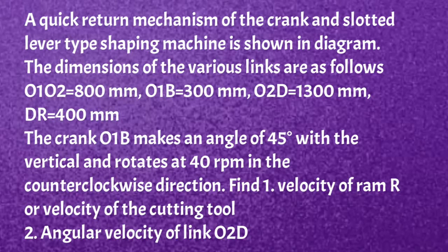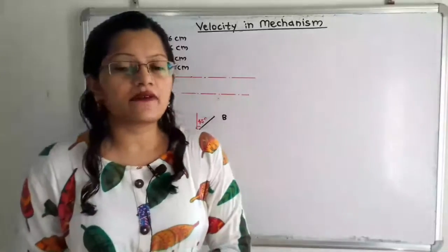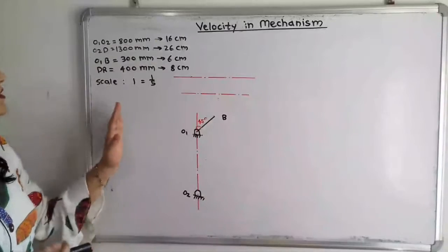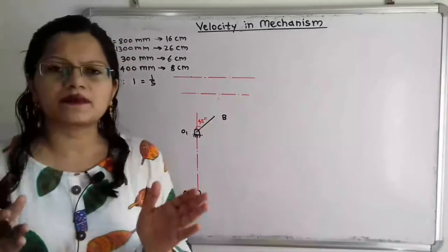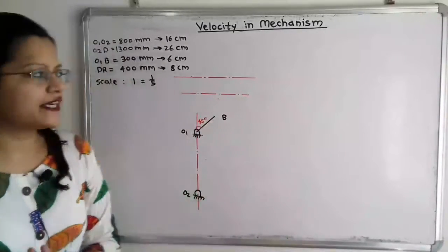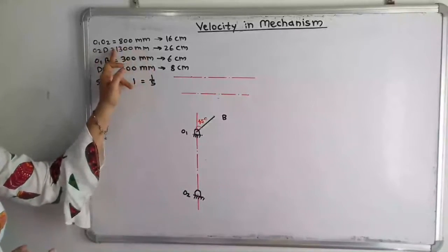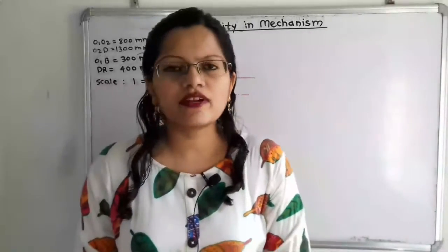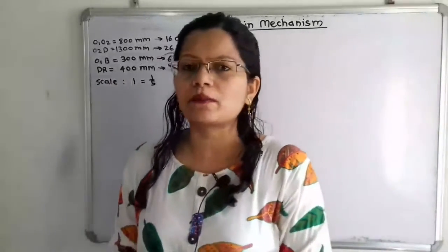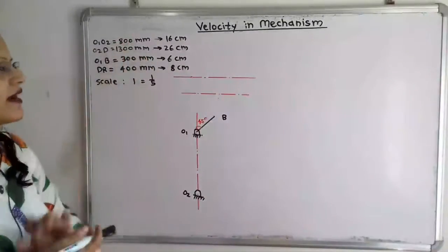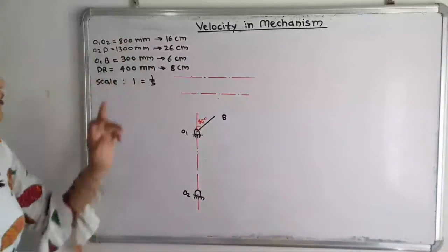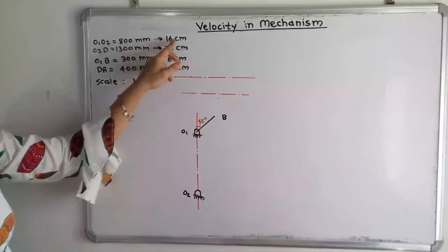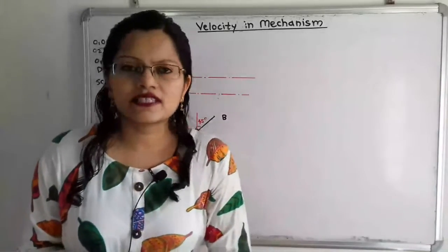Our first point is to draw the space diagram with some suitable scale. If we observe the dimensions, O1-O2 is 800 mm which equals 80 cm, and O2-D is 1300 mm which is 130 cm. These scales are not possible to take directly, so we will take scale 1:1/5. That means we will divide by 5. So O1-O2 is 80 cm divided by 5, giving us 16 cm as the vertical distance between O1 and O2.